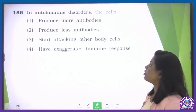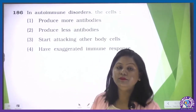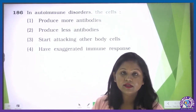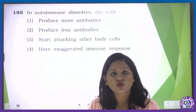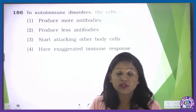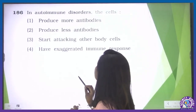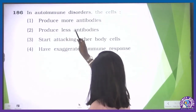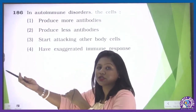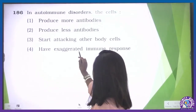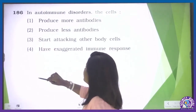Question number 186: in autoimmune disorder, the immune cells of the body start attacking other body cells. Nearly 80 autoimmune diseases have been identified. Options: produce more antibodies — no. Produce less antibodies — incorrect. Start attacking other body cells — this is the correct description of autoimmune disease. Have exaggerated immune response — that is allergy. So the correct option is the third one.